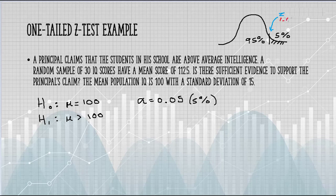So we have our Z critical value. The last thing we need to do is figure out what is our Z score for the sample data.